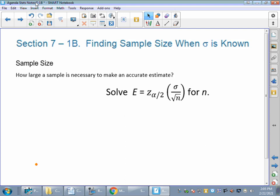So 7.1a was all about writing confidence intervals. That was kind of a big idea in finding z of alpha over 2. 7.1b is a short one because all we're going to do is find sample size.